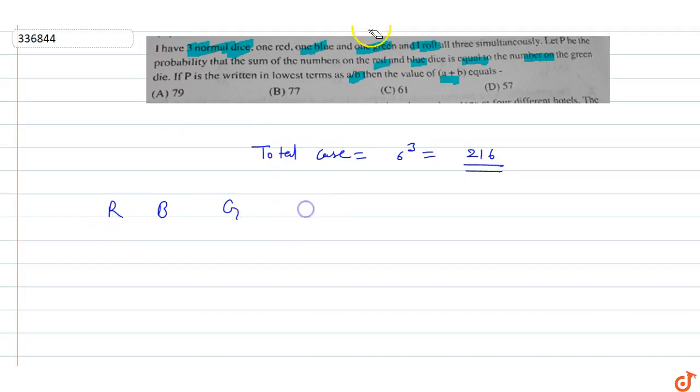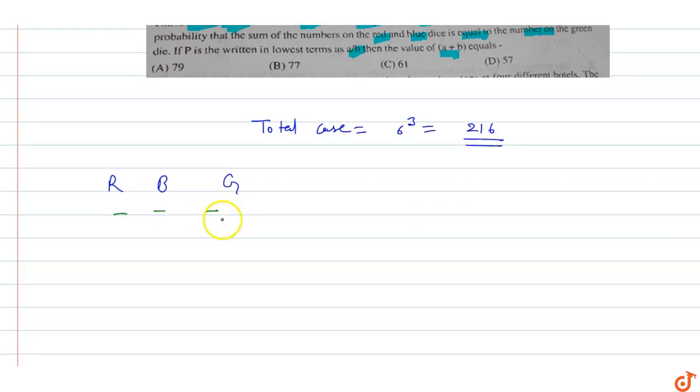The probability is that the sum of red and blue equals green. Let's suppose green shows 1 - there's no possibility since the minimum sum is 2.